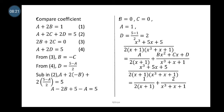We arrived at that result by substituting A = 1, B = 0, C = 0, and D = 2. Since B = 0, the x² term in the partial fraction disappears. Since C = 0, the x term also disappears, leaving only D = 2 in the numerator of the second fraction. That gives our simplified result.